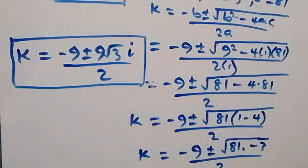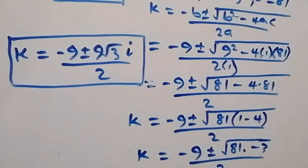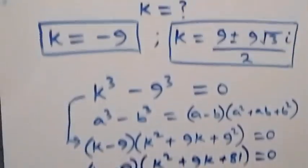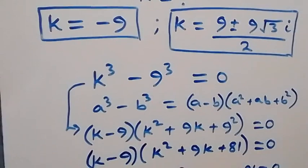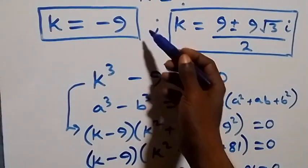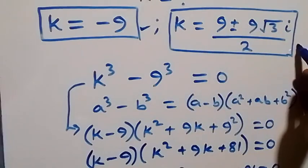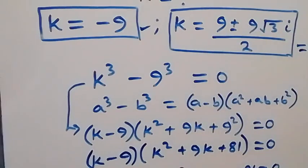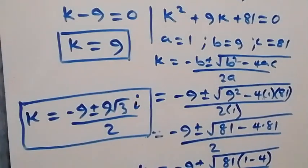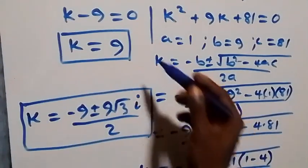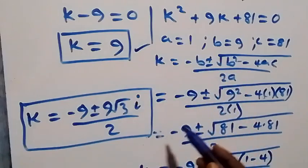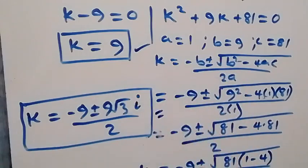Altogether, we have six solutions in total. From Case 1, we have k = -9 as one real solution and two complex solutions. From Case 2, we have k = 9 as one real solution and two more complex solutions. That gives us two real solutions and four complex solutions, making six solutions altogether.